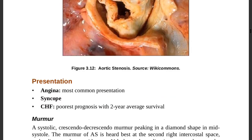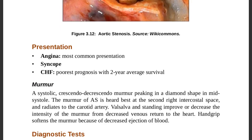Presentation of aortic stenosis: angina (ischemic chest pain) is the most common presentation; syncope — sudden loss and regain of consciousness — is a key feature; and congestive heart failure carries the poorest prognosis, with an average survival of only two years if both aortic stenosis and CHF are present.